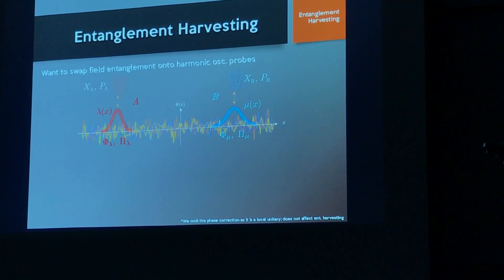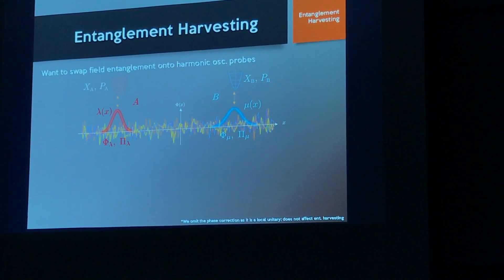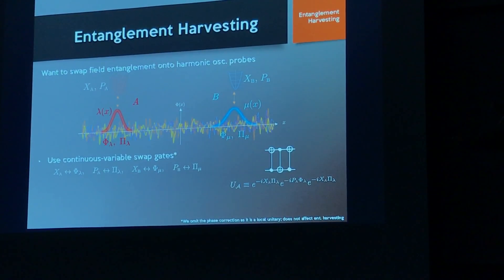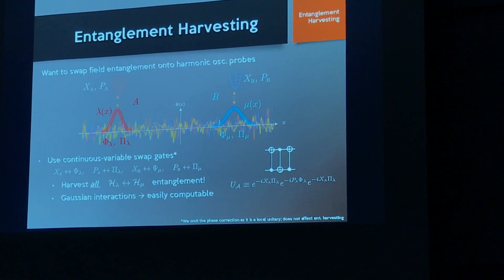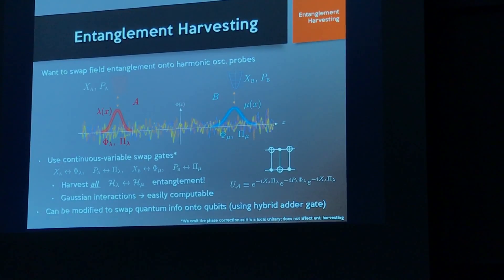The first application is entanglement harvesting. The goal is to swap entanglement living between subspaces of the field onto probes. I choose harmonic oscillators for compatibility, and do a continuous variable swap gate. Just as in quantum computing where swap gates are built from qubit adders, here we use harmonic oscillator adders. We swap the state locally at two sites, and whatever entanglement existed between those two subspaces gets transferred onto the probes. You can harvest all the entanglement for the ground state or any target state.